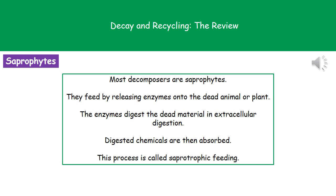We have this term called a saprophyte. Most decomposers are saprophytes and they feed in a slightly different way. What they do is release enzymes onto the dead animal or plant, and those enzymes digest the dead material in a process called extracellular digestion — digestion happening outside of cells. Once the material has been digested, the decomposer absorbs those chemicals. That is what we mean by saprotrophic feeding: secreting enzymes onto dead material and then absorbing the digested products that result.